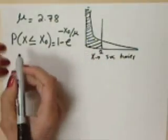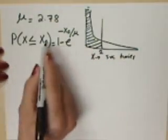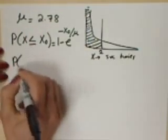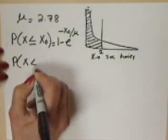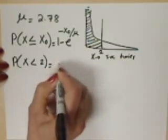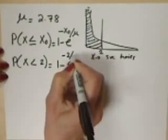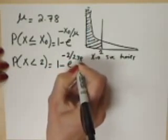Now, for this problem, to translate this into notation, we say probability that service times is less than 2 is equal to 1 minus e raised to the power of negative 2 over 2.78.